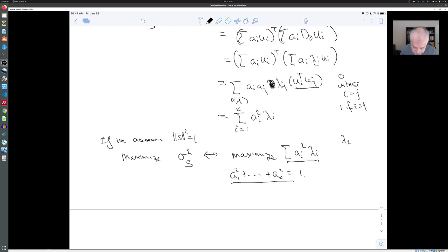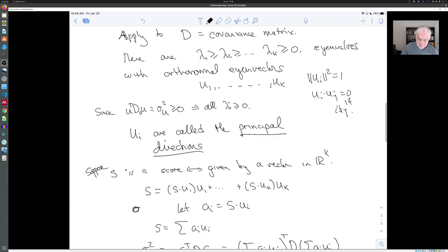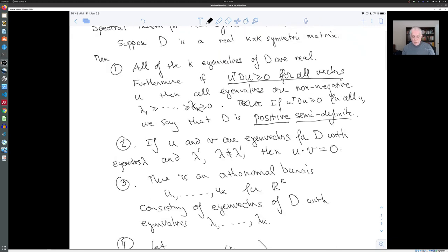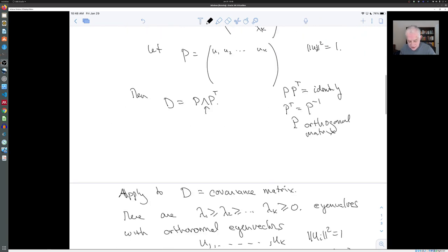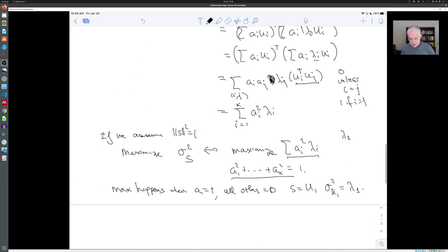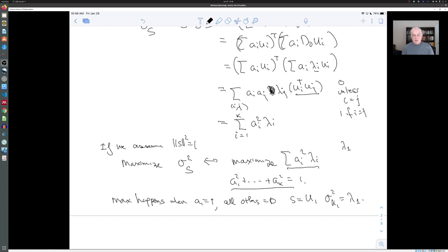So the maximum value happens when a1 equals one and all the others equal zero, so s is u1 and the variance is the biggest eigenvalue. The largest possible variance you can get is the largest eigenvalue, and this is an application of the spectral theorem. If we had known these facts from the beginning, we would not have had to do all of our taking of derivatives and so forth. We could have just said our covariance matrix is a real k by k symmetric matrix and immediately be able to do this calculation. But one way of proving the spectral theorem is actually to use the Lagrange multipliers argument that we just went through.